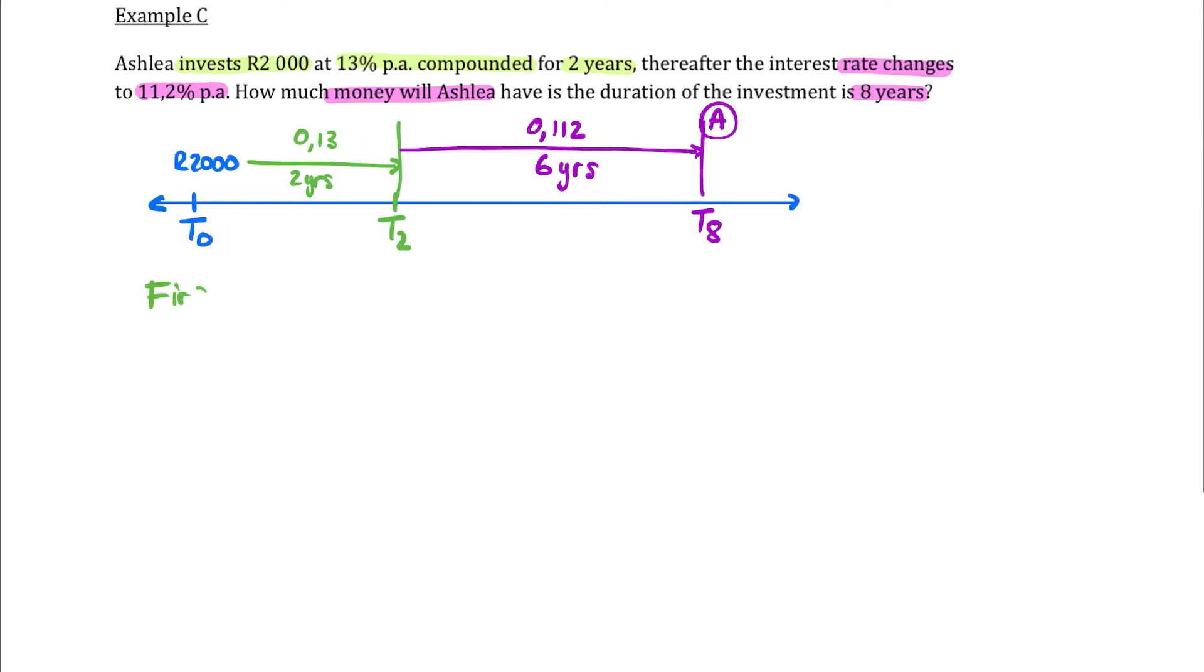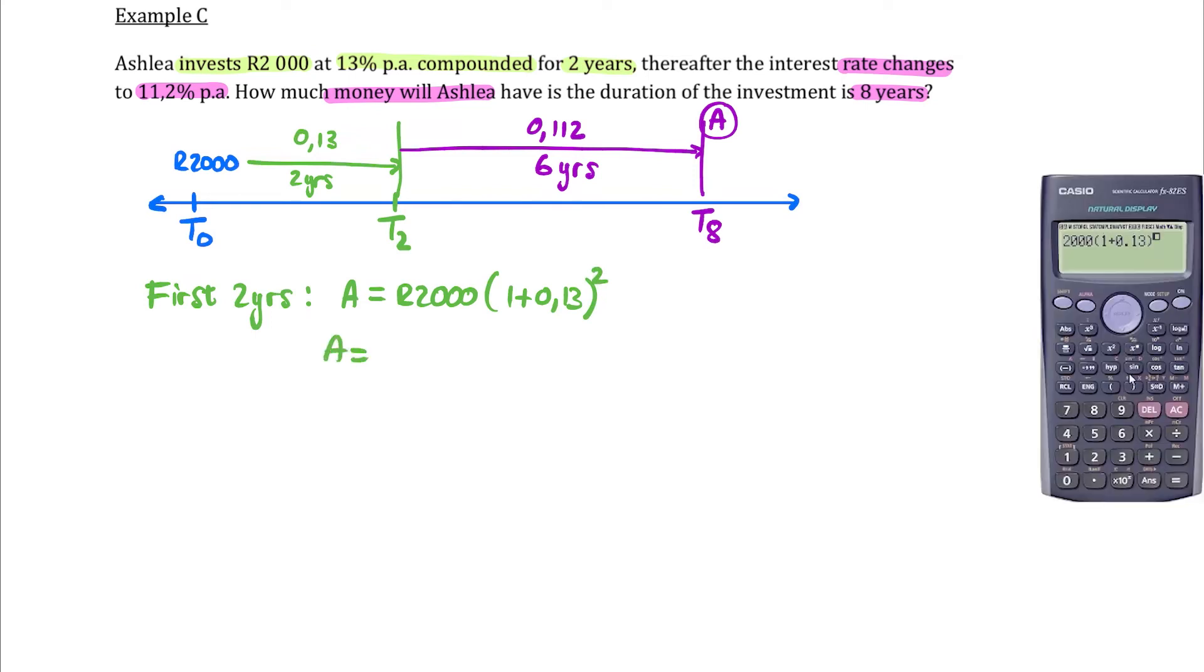So for the first two years, the value at T2 is going to be 2000 Rand, 1 plus 0.13 with an exponent of two. So this is now going to be slightly more than 2000 Rand because we've earned interest. And if we use our decimals here, we see that we've got 2,553 Rand with 80 cents.